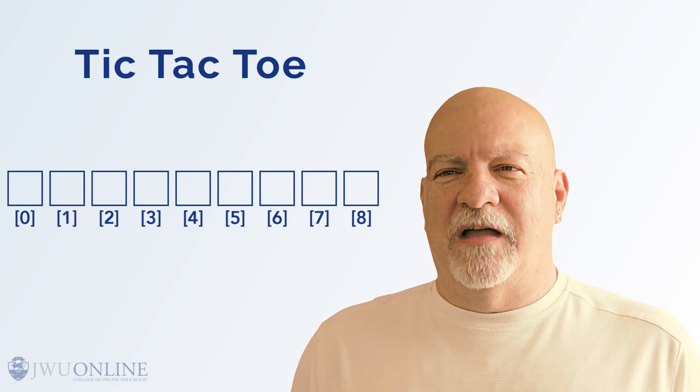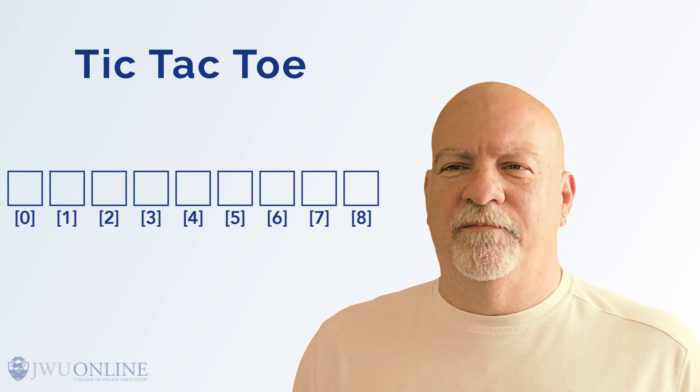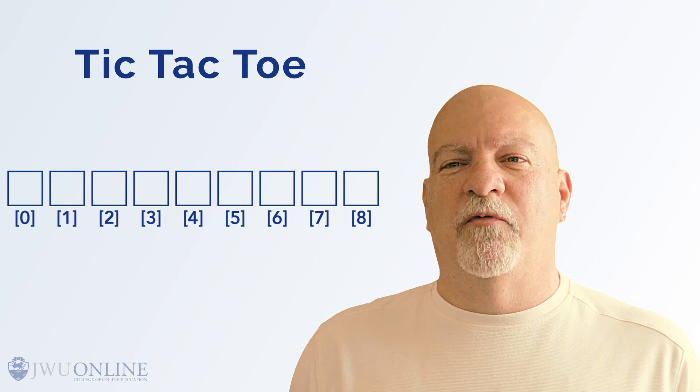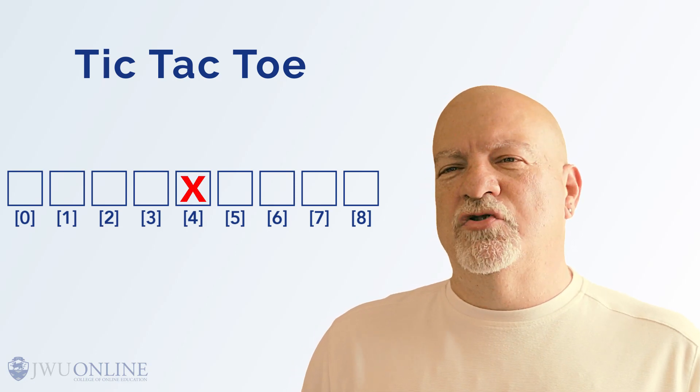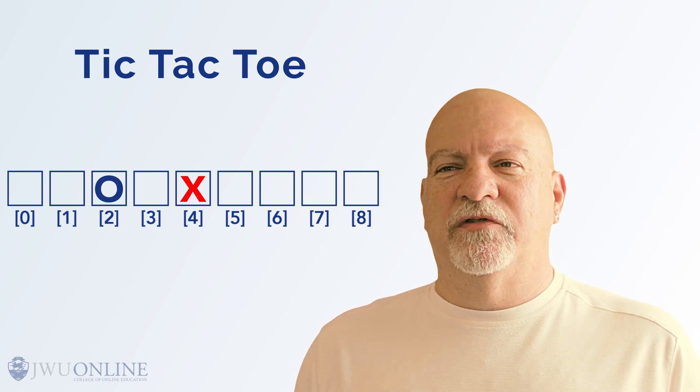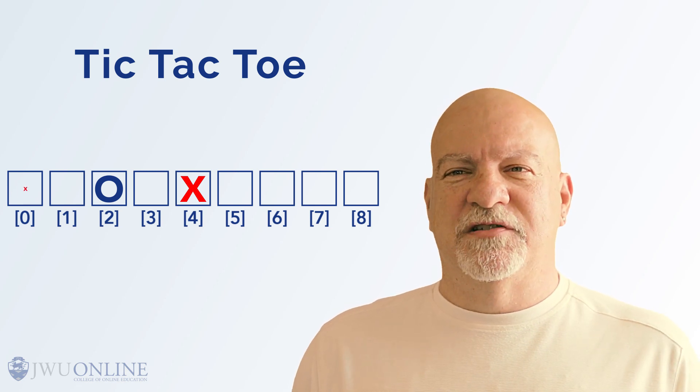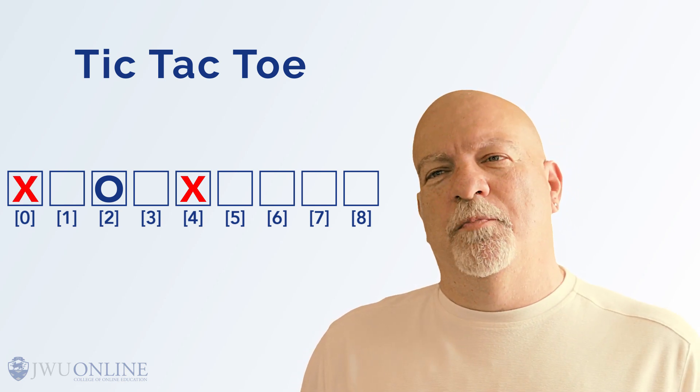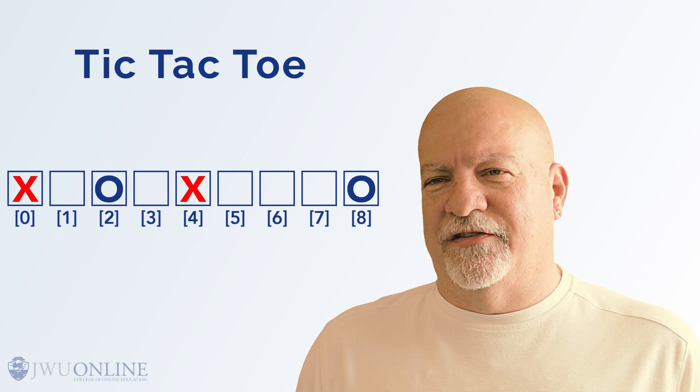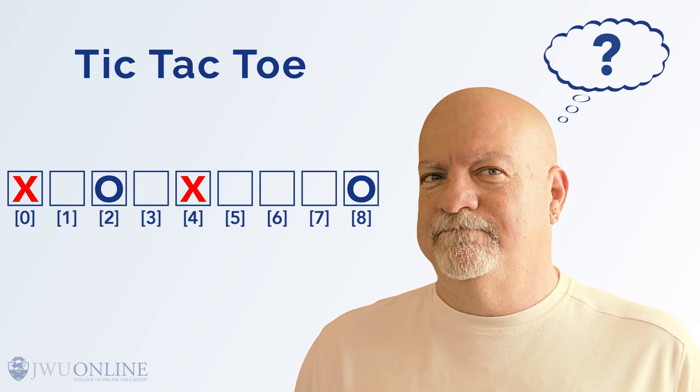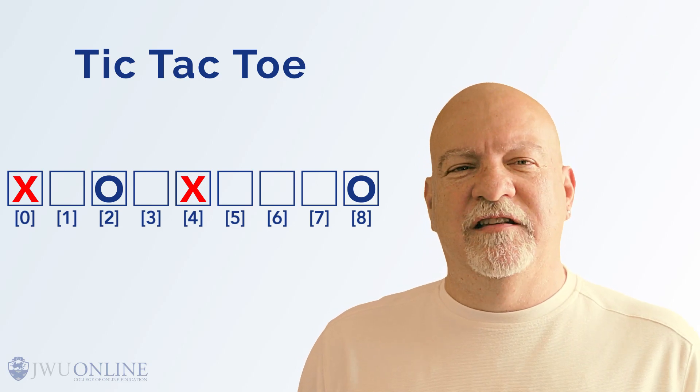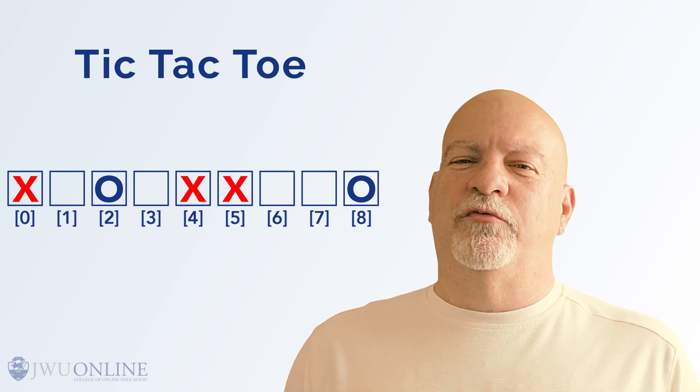So let's play. I'll go first as X and you'll be O. I think I want the middle square, so I'll pick T-T-T sub 4. Let's just say you choose the upper right, so you choose T-T-T sub 2. Well then, I will take the upper left, T-T-T sub 0. Now you need to block, so you pick T-T-T sub 8. Following along, what should X do next? Well, I am going to block, so I need to choose T-T-T sub 5. Boy, this is really confusing.